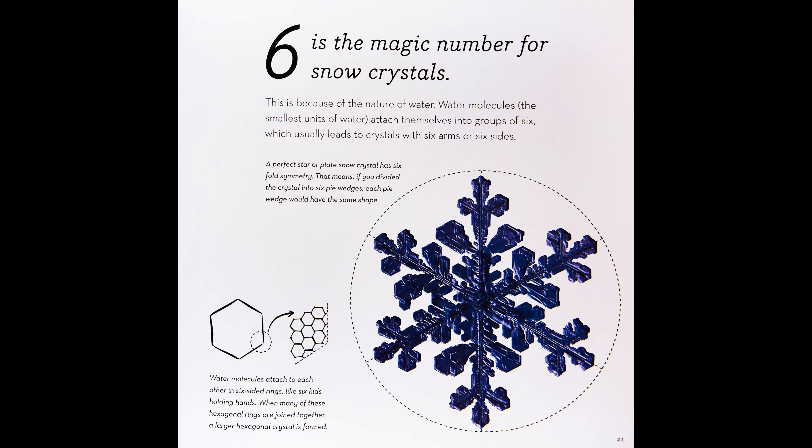Six is the magic number for snow crystals because of the nature of water. Water molecules — the smallest units of water — attach themselves into groups of six, which usually leads to crystals with six arms or six sides. A perfect star or plate snow crystal has six-fold symmetry, meaning if you divided the crystal into six pie wedges, each pie wedge would have the same shape. Water molecules attach to each other in six-sided rings, like six kids holding hands. When many of these hexagonal rings are joined together, a larger hexagonal crystal is formed.